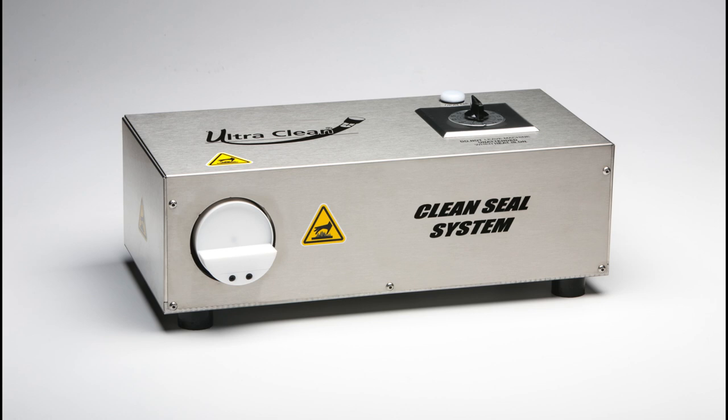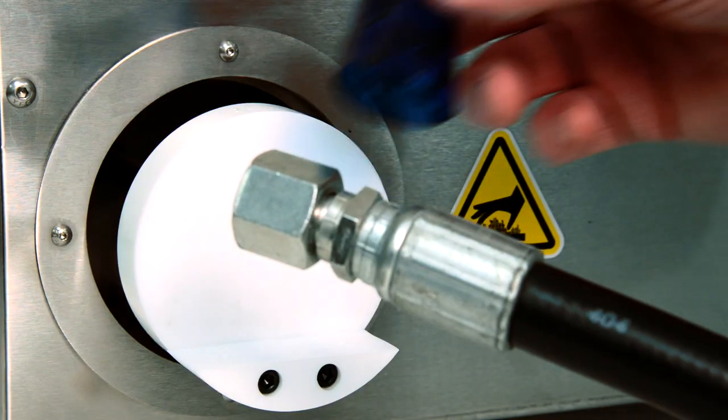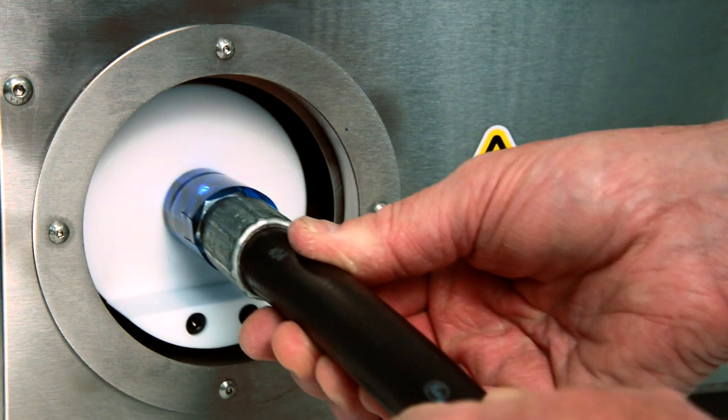UltraClean Technologies developed the CleanSeal system as an advanced capping method to raise the bar on cleanliness. This innovative technology uses heat to shrink capsules onto cleaned hose and tube assemblies.